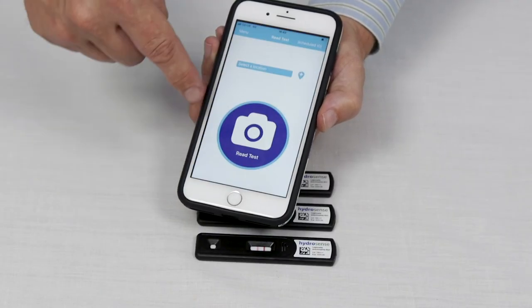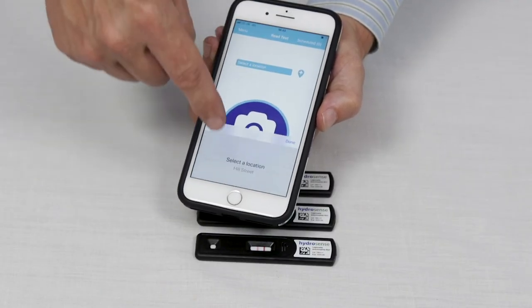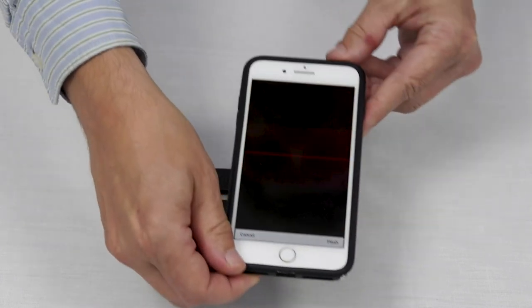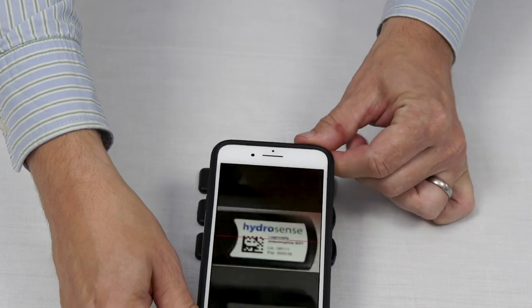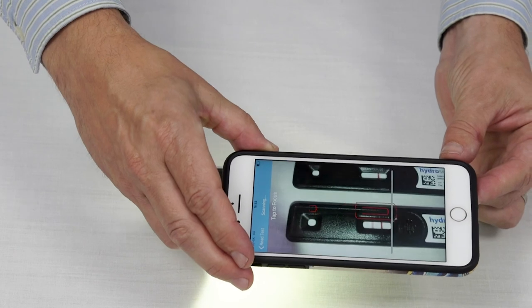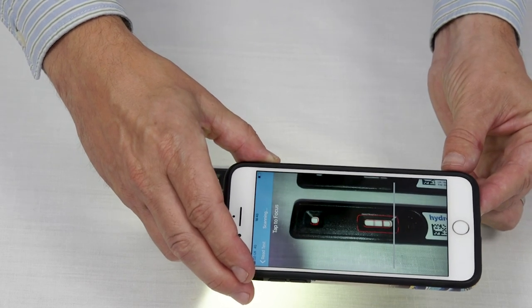To use the app, launch the app, select a pre-programmed location, and click read test. Scan the barcode and then read the test by matching up the image on the screen with the cassette.